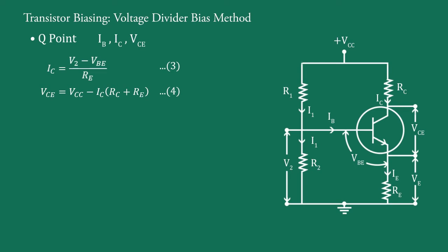Now, we need base current IB. To specify the operating point at the center of load line, the value of VCE should be 0.5VCC.